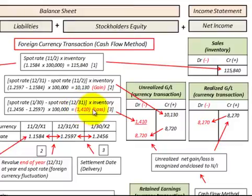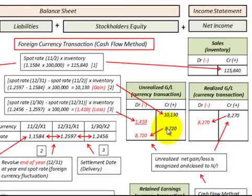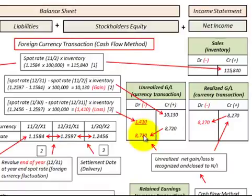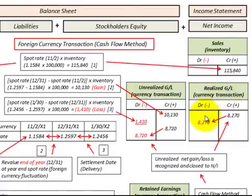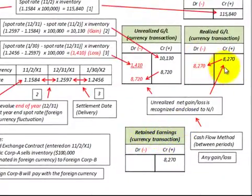For the $1,410 loss at the settlement date, we would debit the unrealized gain and loss account. Then at the settlement date, we'd net out our $10,130 gain with the $1,410 loss, giving a net gain of $8,720. At this point it's still an unrealized gain, so we would close this unrealized gain to the realized gain as part of our net income — debiting $8,720 in unrealized gain and crediting our realized gain for $8,770. At the end of the year, we close this realized gain out to our retained earnings, crediting retained earnings for $8,270.